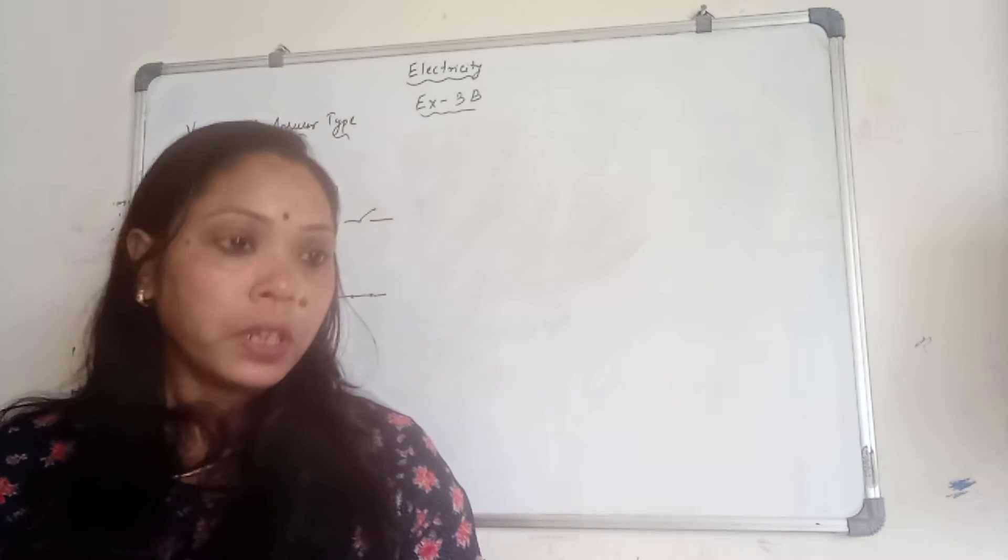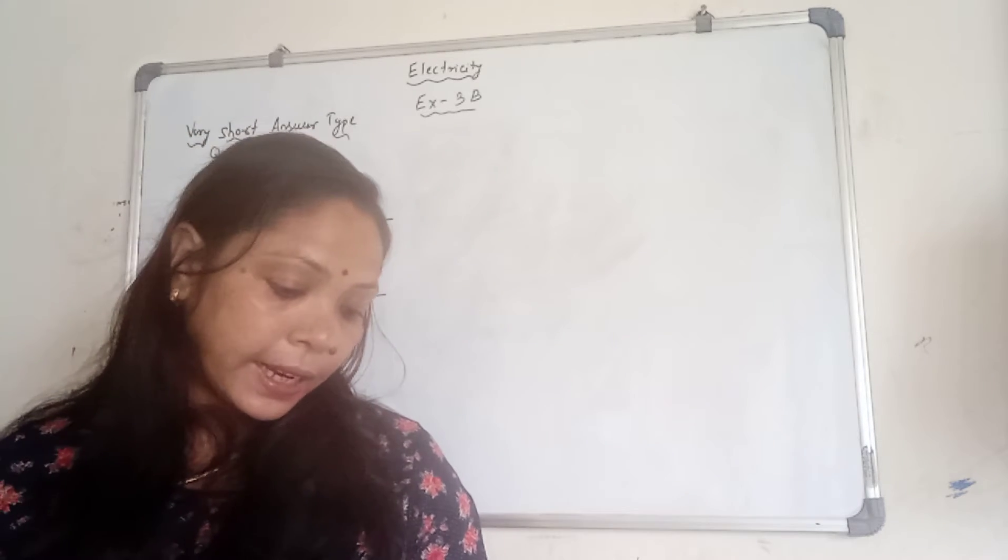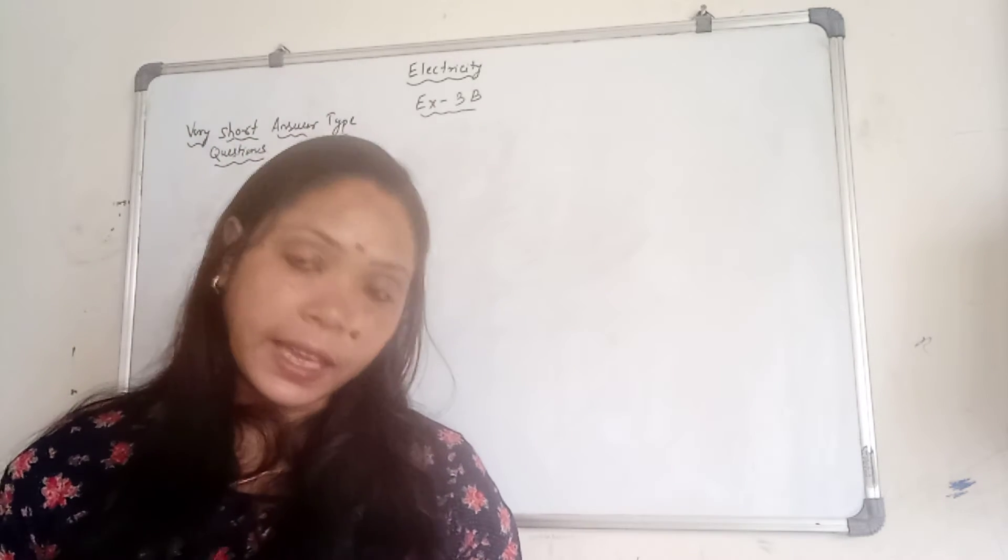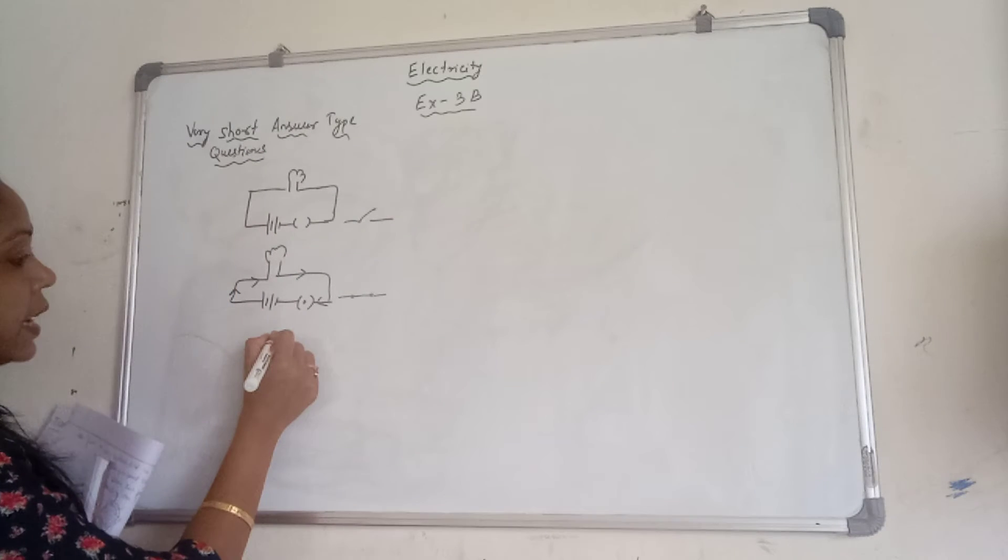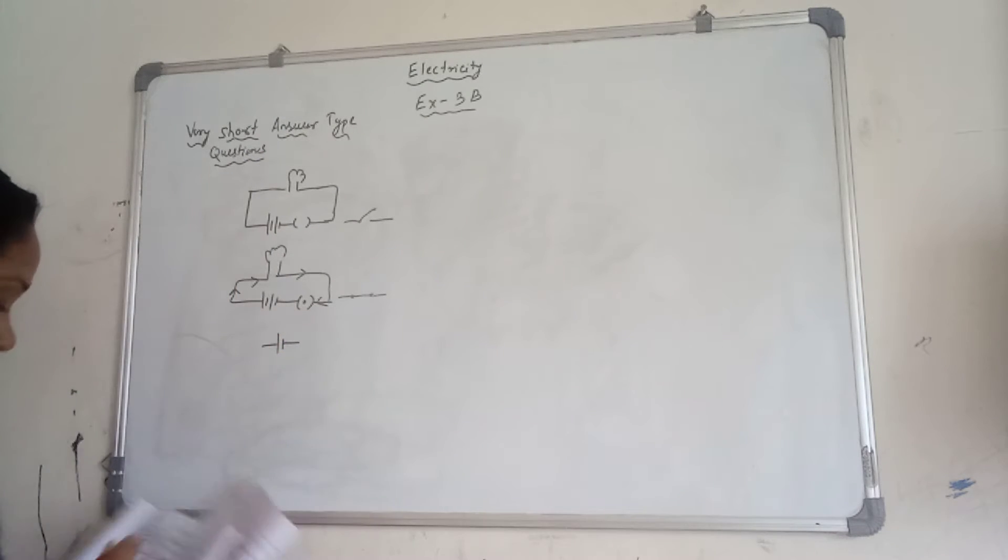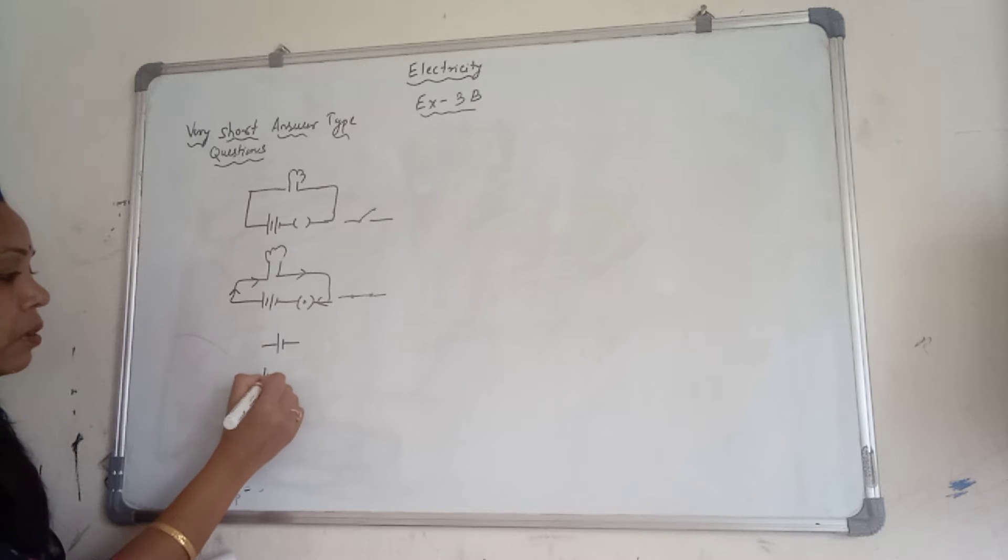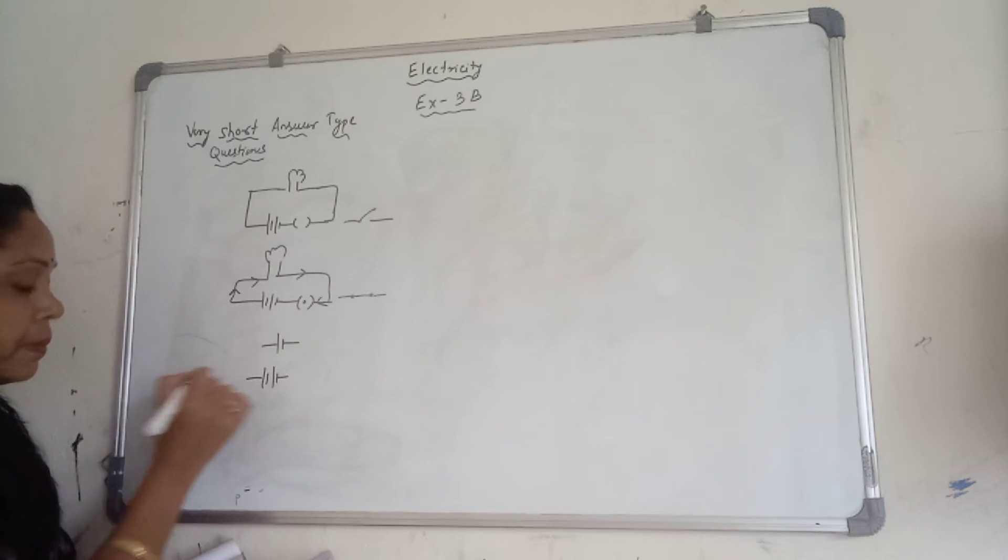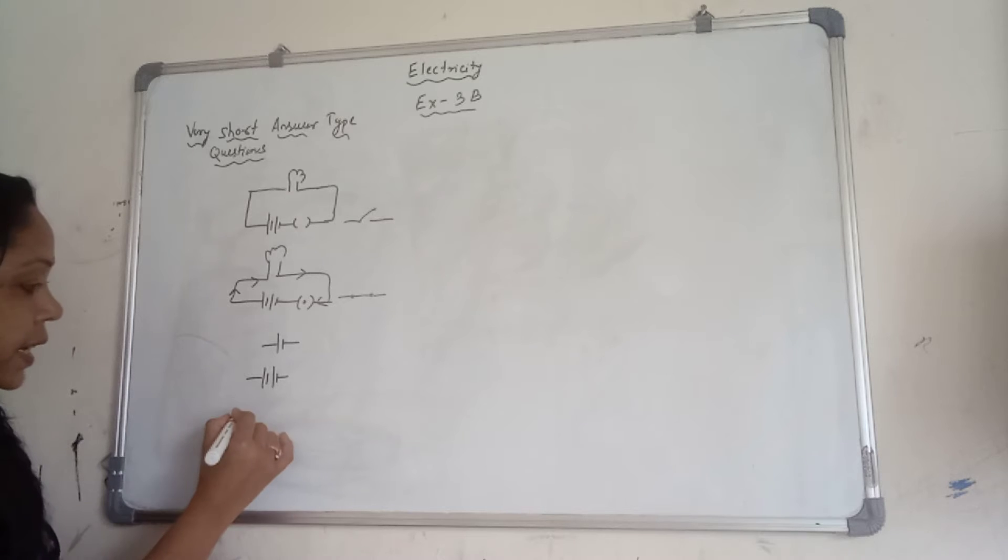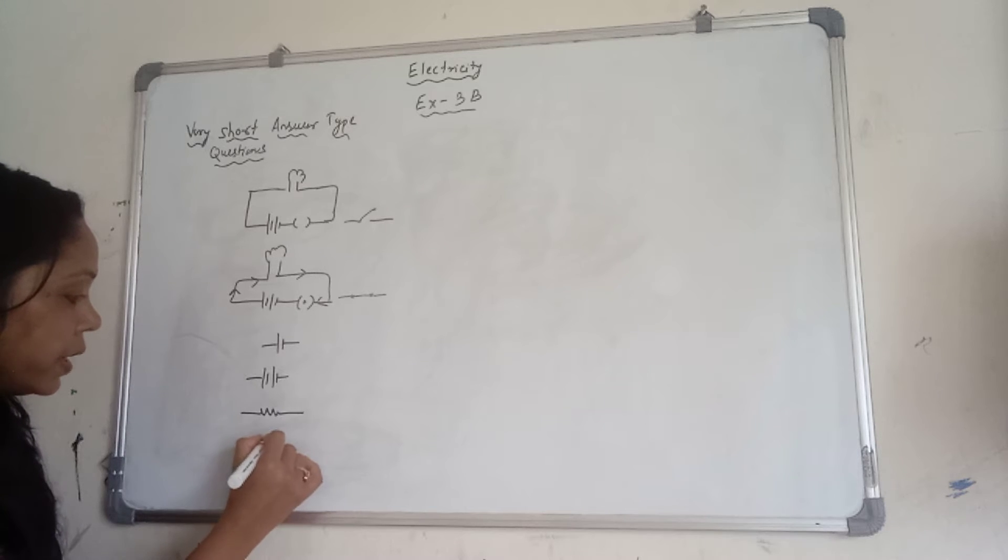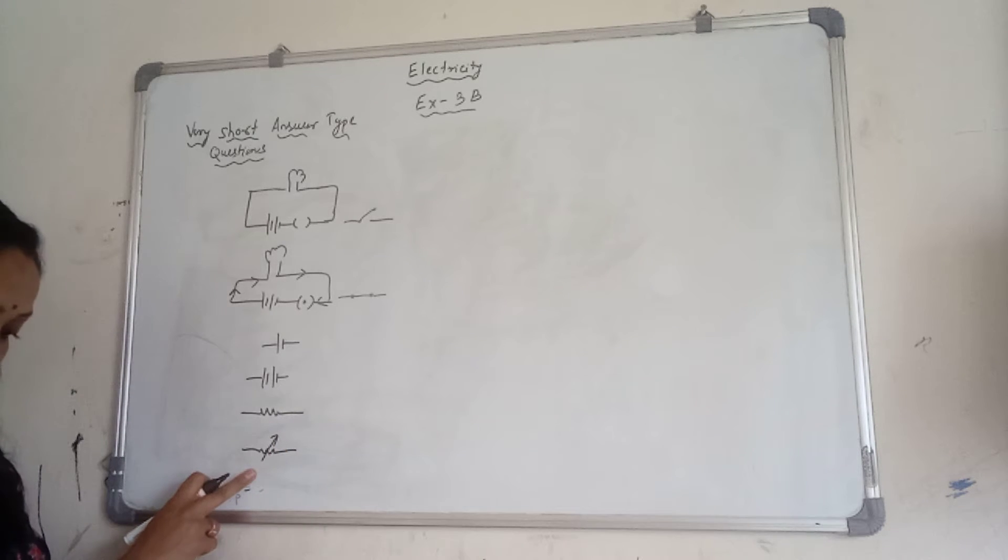Question number 2: give the symbol of the following electrical components. Electric cell, you know that electric cell is given by this symbol. Then, electric battery, battery means the combination of cells, like this. Then, resistance, this is the symbol of resistance. Then, symbol of rheostat, if you draw this one and put one arrow with resistance, that is the symbol of rheostat, means variable resistance.